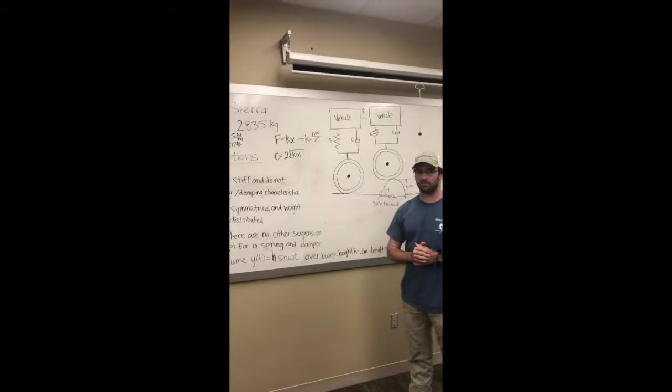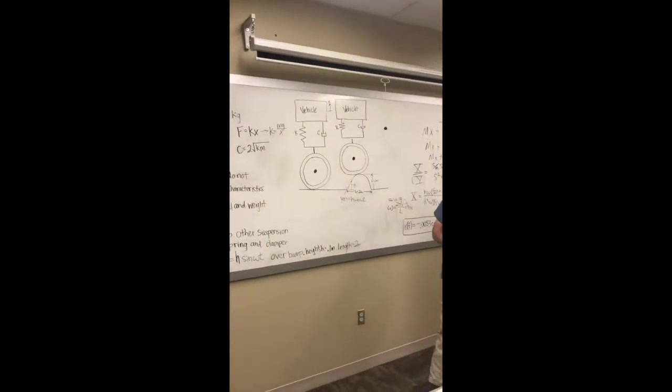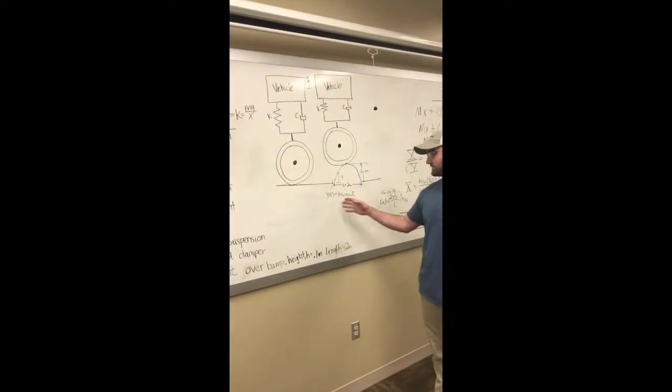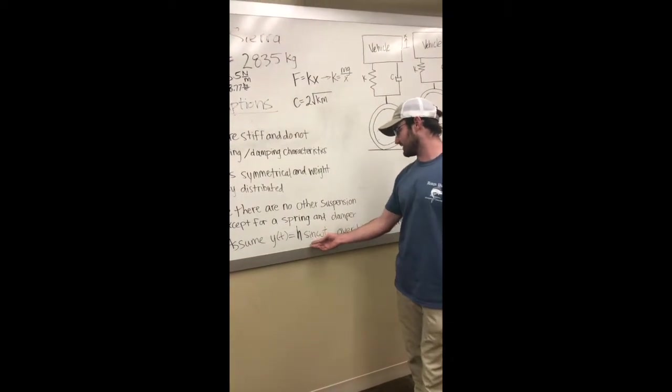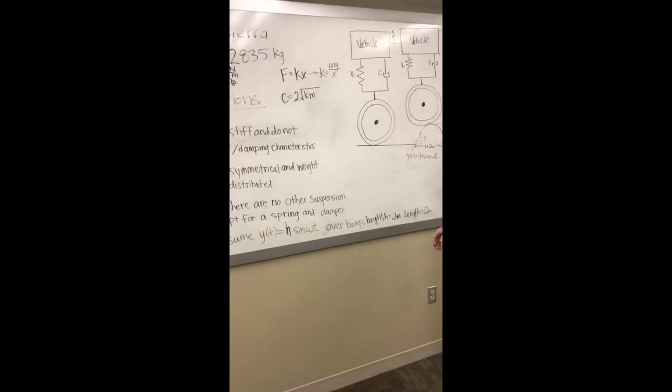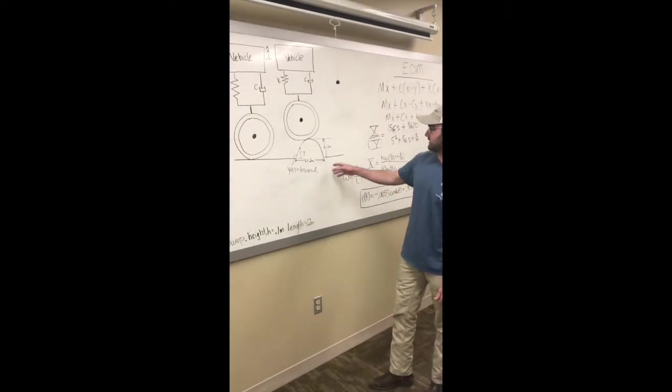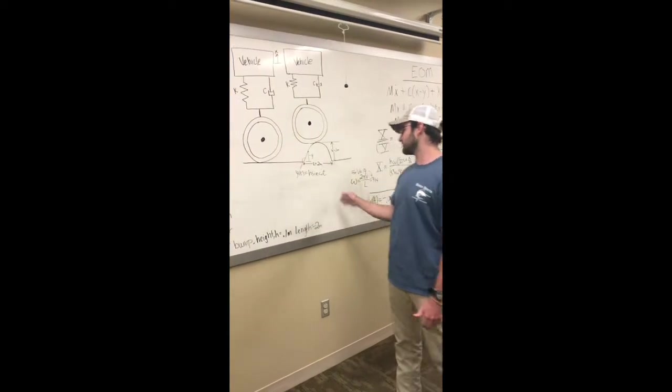For the speed bump, we had to make some assumptions. We said it would take the shape of a sine wave, so we assumed Y(t) equals H times sine omega t. We got the H, or the height, assuming it's 0.1 meters, and we assumed it's 2 meters long.